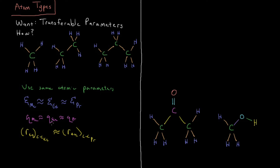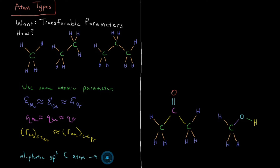What we're really getting at is that these carbons are in the same chemical environment — very similar to each other, the same hybridization. So we're saying they're effectively the same atom type. The aliphatic sp3 carbon atom is an atom type. Wherever we see an sp3 carbon atom that isn't bonded to an electronegative atom, we can treat it as the same kind of carbon. In AMBER, this particular atom type is called CT.